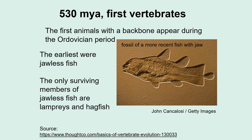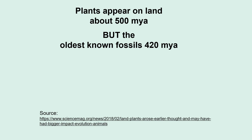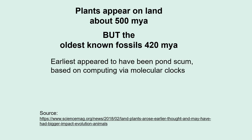The earliest of these were jawless fish. Today, the only surviving members of jawless fish are the lampreys and the hagfish. Plants appear on land, it is thought, about 500 million years ago, but our oldest known fossils date only to 420 million years ago. The earliest land plants appear to have been pond scum. This is based on computing via molecular clocks, which we'll talk about later.